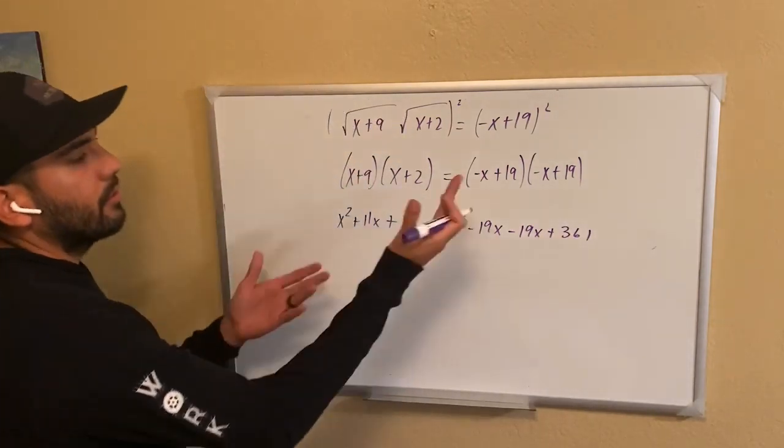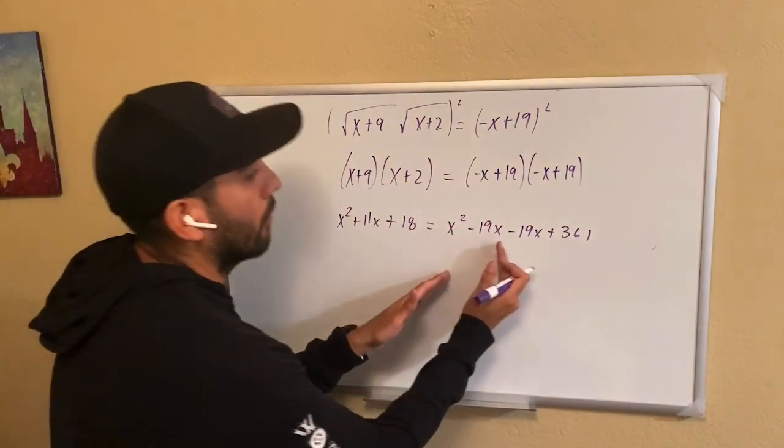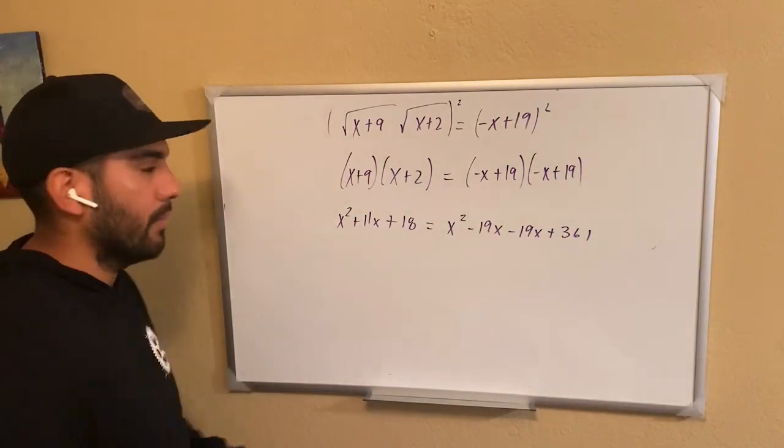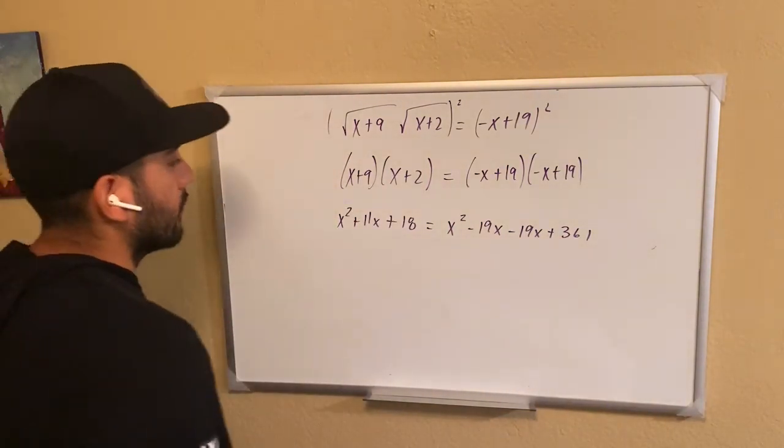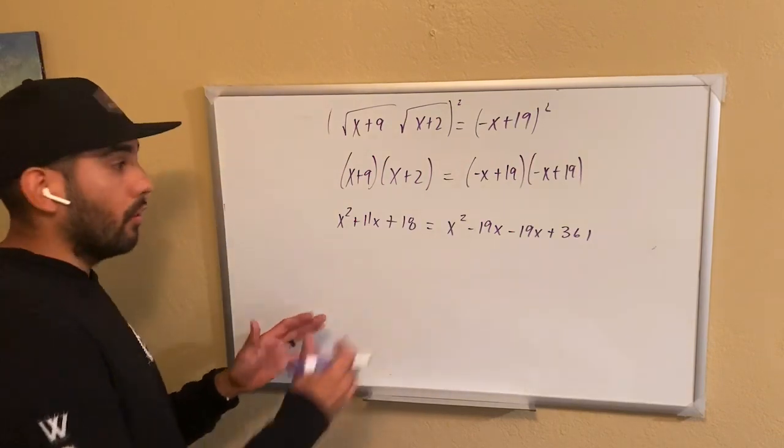That becomes x squared minus 19x minus 19x plus 361. Now I noticed that I did the full FOIL method. I wanted to show you that on the right side. On this one, I kind of already did the math in my head. Honestly, that was just instinct, and I have it, so I apologize for that.